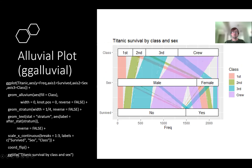This is a fun plot I haven't used a ton — it's called an alluvial plot. This basically tells you how groups change within discrete categories. This is a somewhat morbid plot — it's survival on the Titanic by class — whether first, second, third, or crew — and the sex. You can see a lot of the first-class passengers were male, color-coded red, and a lot of those male passengers did not survive. Over with the crew, again a lot of the crew were male and a lot of the crew did not survive. You can make this in many different ways.